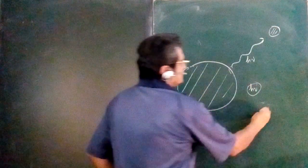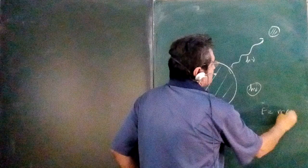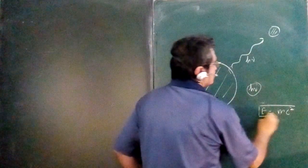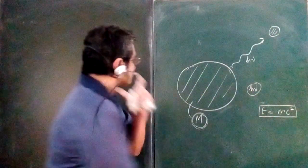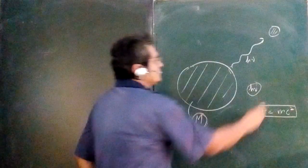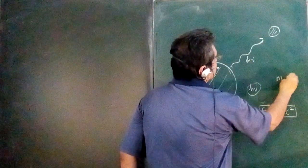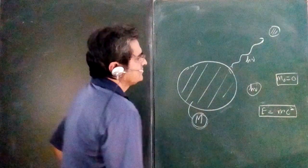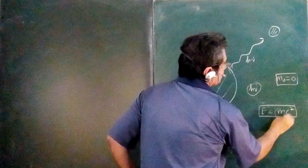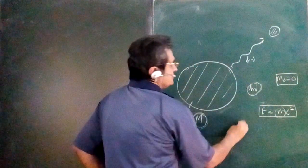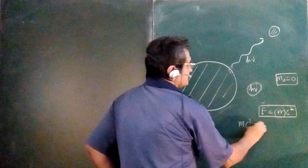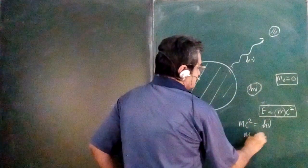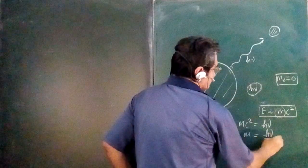We know that energy can be expressed in terms of mass also, E is equal to mc². So though the photon has zero rest mass, we can associate hypothetical mass equivalent to this energy. So this mc² is h nu, so m can be written as h nu upon c².